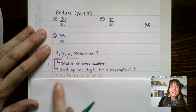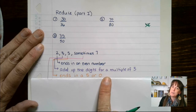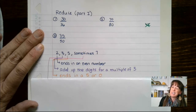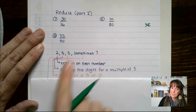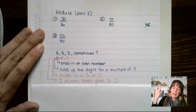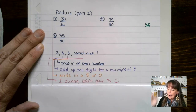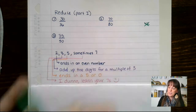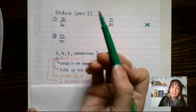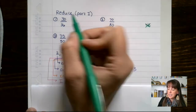Fives: it ends in a 5 or a 0. And friends, if you have not yet grabbed your notebook, you're going to want to be writing these things down because these notes are going to be helpful. For sevens — honestly, I don't know a trick. You're going to have to learn your multiplication tables for sevens. So let's talk about reducing. First things first, I always look at my twos, and if I have an even number like 30 and 36, all I do is cut those in half.